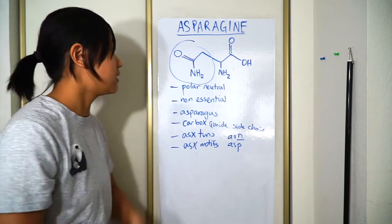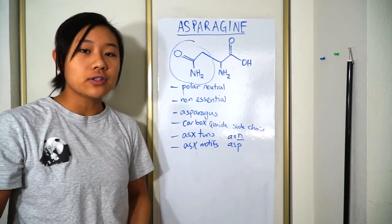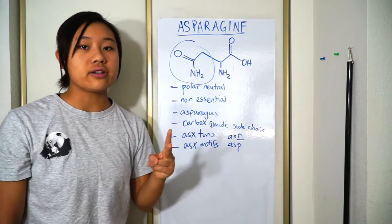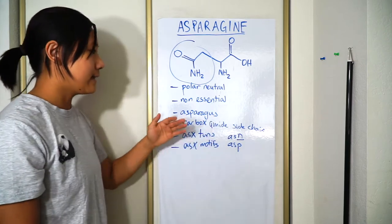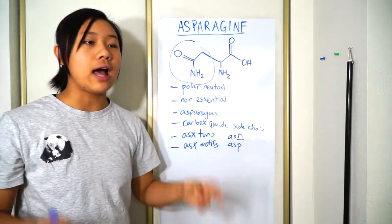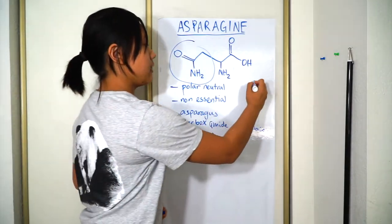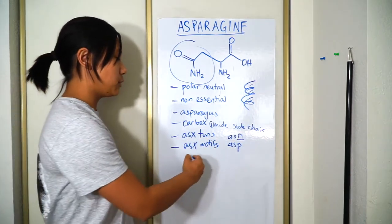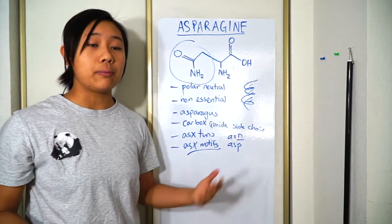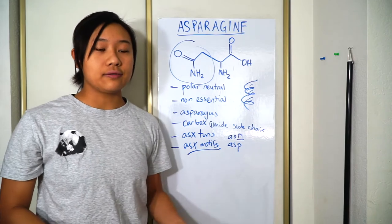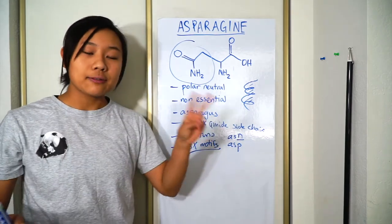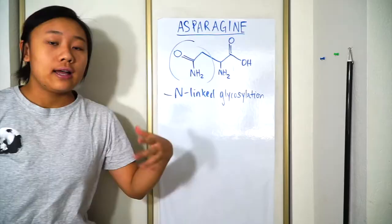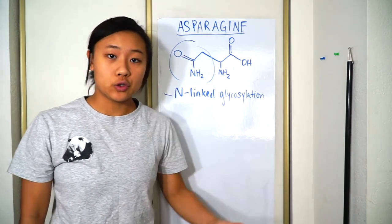ASX turns involve about two to three amino acids and participate in hydrogen bonding because the side chain allows them to — very similar to ST turns and motifs. ASX motifs are four to five amino acid residues that have two internal hydrogen bonds, just like ST motifs. They also have the ability to cap an alpha helix, preventing the internal hydrogen bonds from coming apart and the helix from unraveling — almost like a telomere on a chromosome.